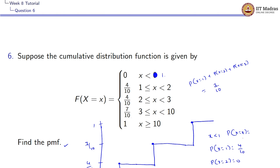For x less than 1 the probability is 0; for x = 1 we have a probability of 4/10 since there is a sudden spike there, and for x = 2 we have probability 0 since there is no spike in the step function. At x = 3: P(X = 1) + P(X = 2) + P(X = 3) = 7/10, which implies 4/10 + 0 + P(X = 3) = 7/10, so P(X = 3) = 7/10 − 4/10 = 3/10.